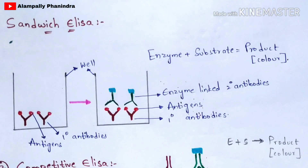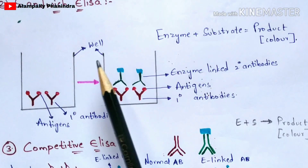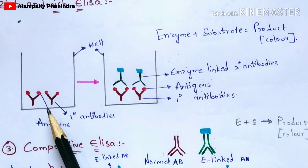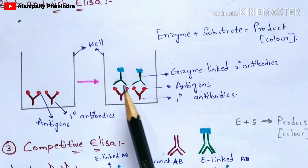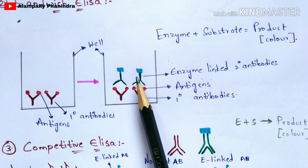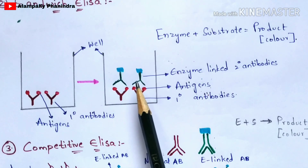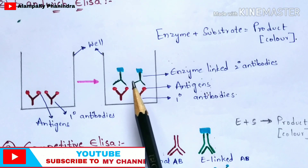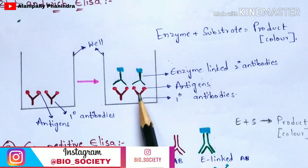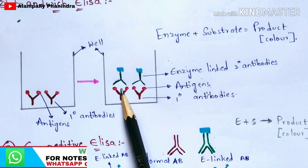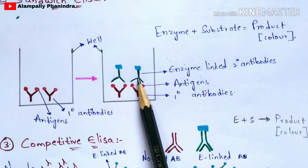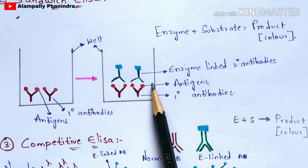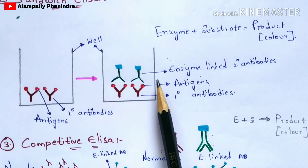The second type is sandwich ELISA. In the well, an antigen-antibody complex is taken first. Then enzyme-linked secondary antibodies are added. This acts like a sandwich: just as a sandwich has bread on top and bottom with filling in the middle, here antibodies are on both sides — primary and secondary — and the antigens are in the middle. Hence it is called sandwich ELISA.